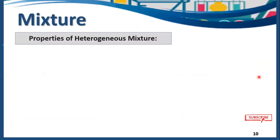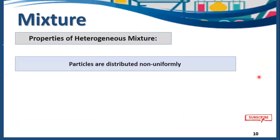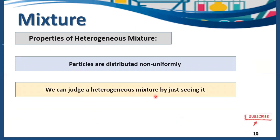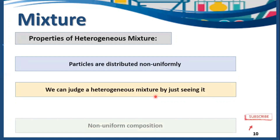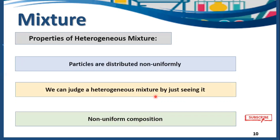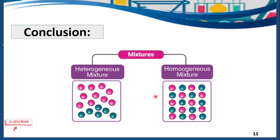Some properties of heterogeneous mixture: particles are distributed non-uniformly throughout the mixture. You can identify a heterogeneous mixture just by looking at it, because you can find the components with your naked eye. The components can also be easily separated. Heterogeneous mixtures have a non-uniform composition and are mostly colloids or suspensions.